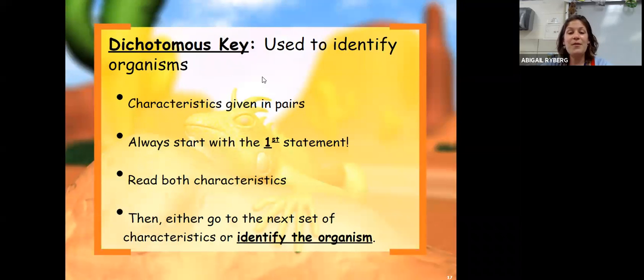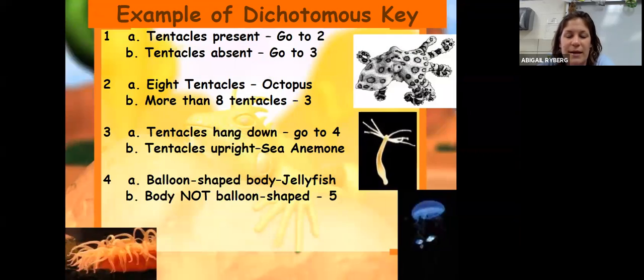Another thing we'll use to identify organisms is called a dichotomous key. We'll get practice with this and there have been them on the test, but they're pretty easy. Dichotomous keys give characteristics in pairs. You'll always start with statement number one at the top. Always read both characteristics that are given, and then you either go to the next set of characteristics or you'll identify the organism.